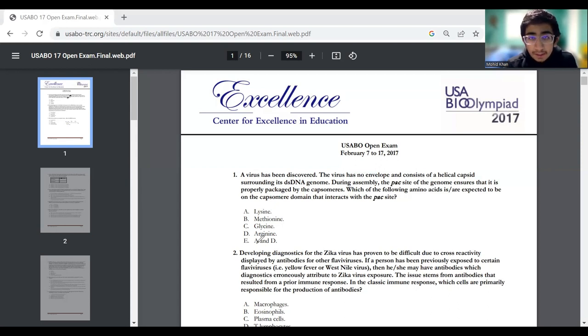Question one. We have a virus has been discovered. The virus has no envelope and consists of a helical capsid surrounding its DSDNA genome. During assembly, the pack site of the genome ensures that it is properly packaged by capsomeres. Which of the following amino acids are expected to be on the capsomere domain that interact with the pack site? One thing with a lot of USABO questions is that most of it is not extremely essential information.